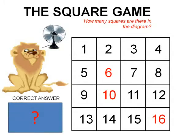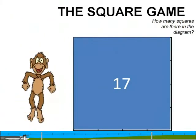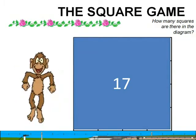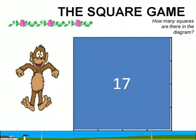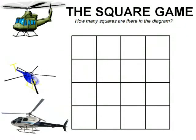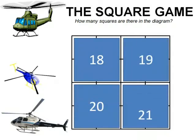Hearing this answer, a little bear started dancing and said the king is not right — the right answer is 17. Many times we forget that when counting we must consider all other options. If we consider the four sides of the diagram, we get another four squares, bringing the total to 18, 19, 20, and 21. So the right answer may be 21.